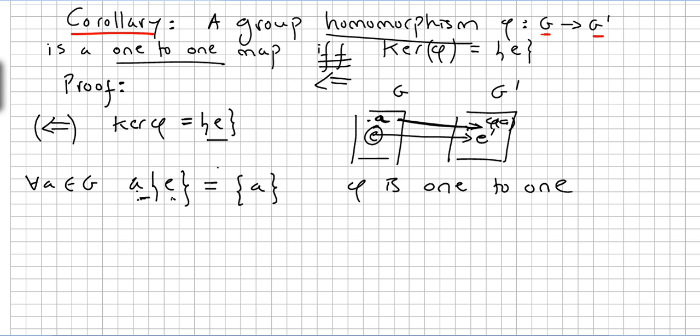So if the kernel of Φ is the set only with the identity, it implies that Φ is 1 to 1. So this direction is proved, this direction here is proved.